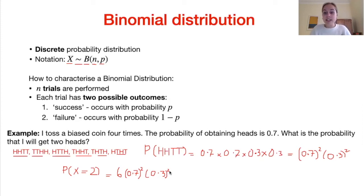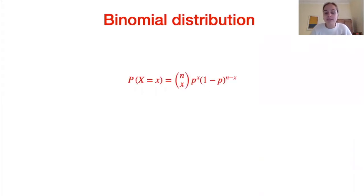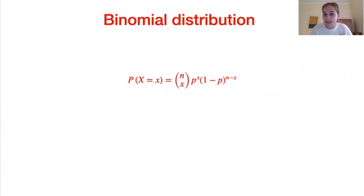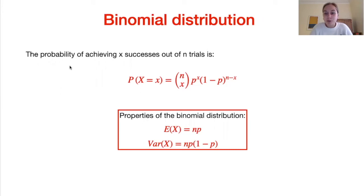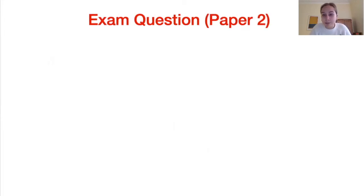There is an easy formula to find the probability of having x successes out of n trials: P(X = x) = nCx × p^x × (1 − p)^(n − x), where nCx counts the number of ways to arrange x successes in n trials, p^x is the probability of the successes, and (1 − p)^(n − x) is the probability of the failures. Two important properties: the expected value of a binomially distributed random variable is np, and the variance is np(1 − p).